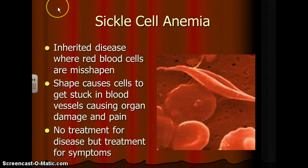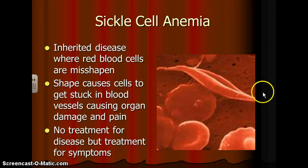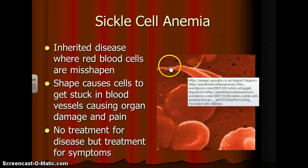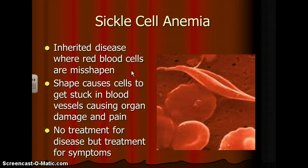Sickle cell anemia is another type of anemia. It is an inherited disease where the red blood cells are misshapen — they are sickle-shaped, as shown here. This shape causes cells to get stuck in blood vessels, which can cause pain and organ damage. There is currently no cure for sickle cell anemia, but there are treatments for the symptoms it causes.